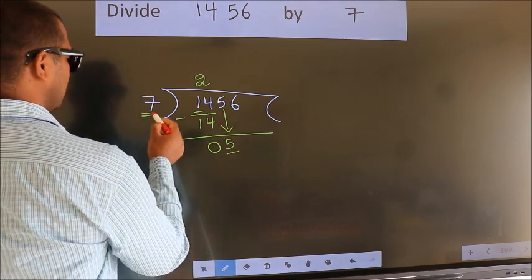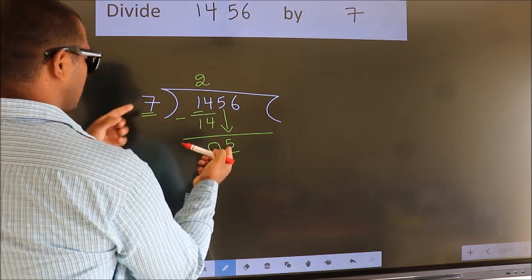Here we have 5. Here 7. 5 is smaller than 7.